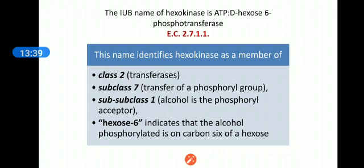The 7 indicates the subclass, which is transfer of phosphoryl group. The 1 indicates the subclass—alcohol is the phosphoryl acceptor.